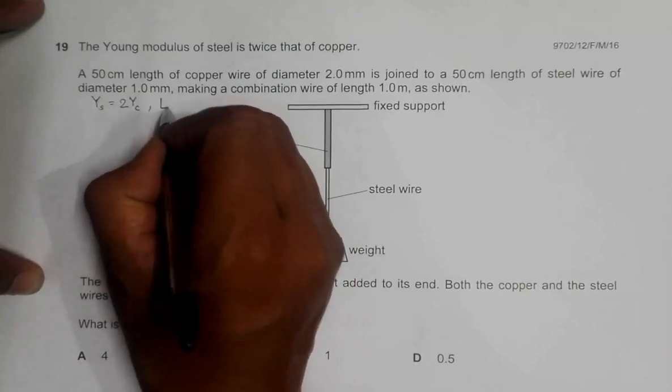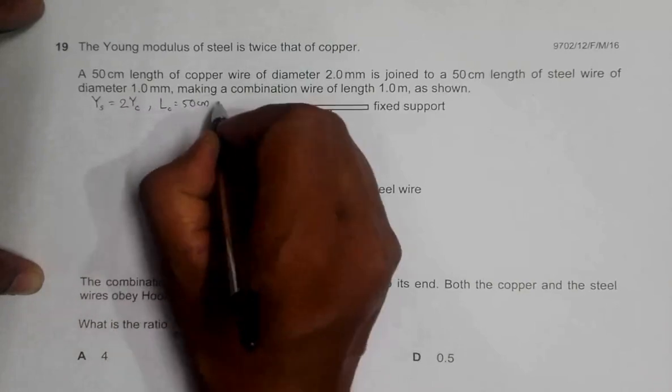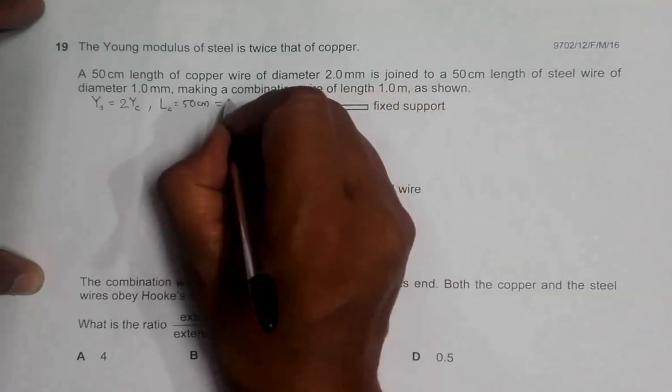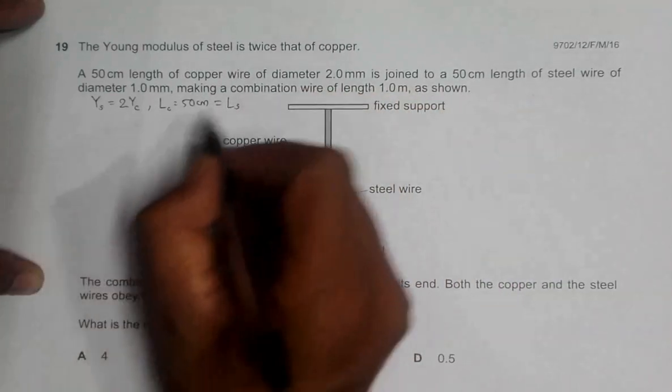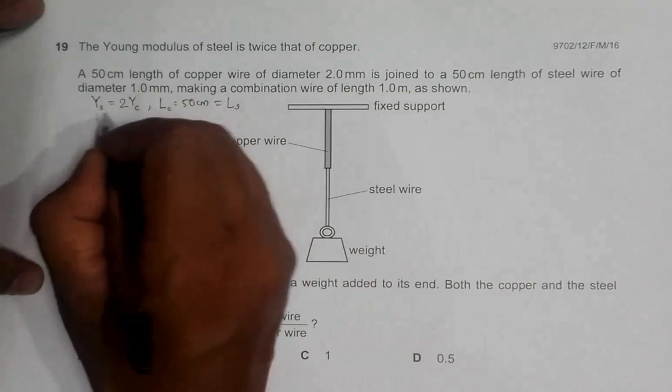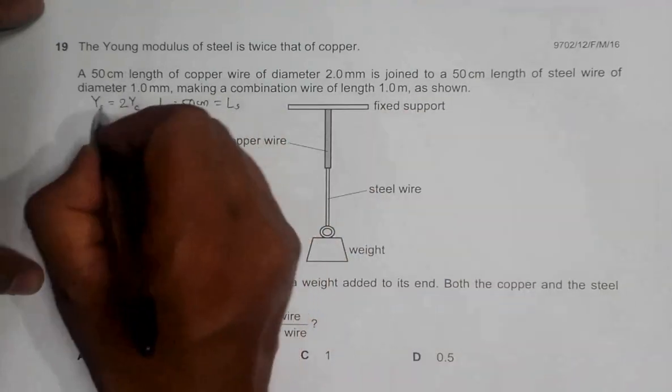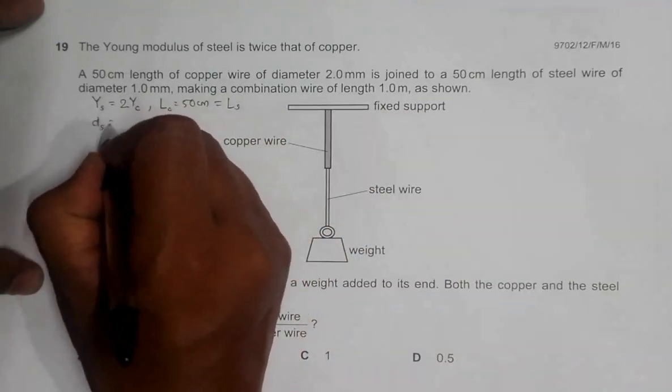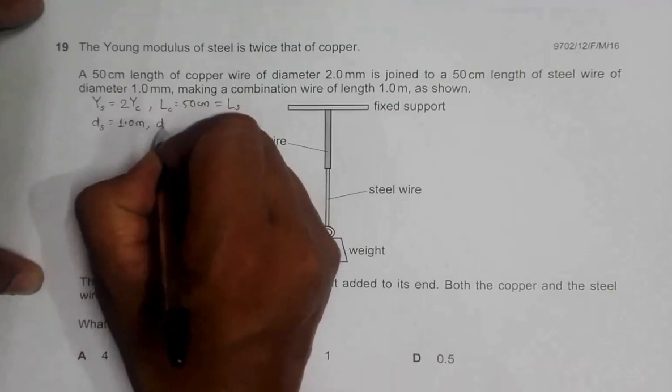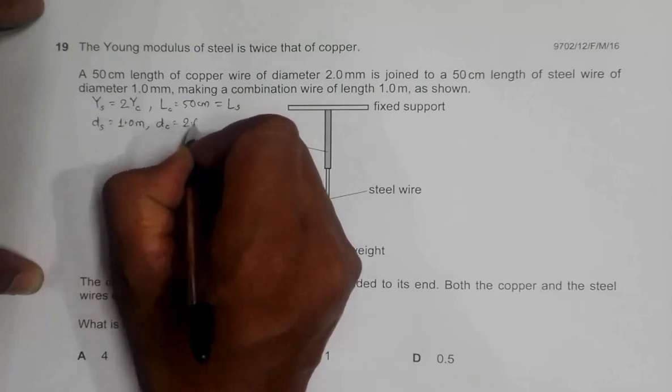We have L of copper equal to 50 centimeter, and that's also equal to the length of steel wire. So length of steel wire, then we have the diameter. Let's try steel first actually. Diameter of steel wire DS is equal to 1.0 millimeter, and diameter of copper wire is equal to 2.0 millimeter.